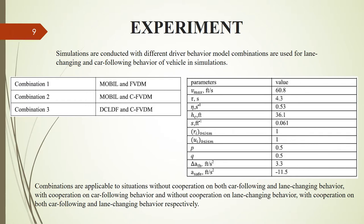Simulations are conducted with different driver behavior model combinations that are used for lane-changing and car-following behaviors of vehicles in simulation. As shown, the driving model combinations include MOBIL and FVDM, MOBIL and C-FVDM, and DCLD and C-FVDM, which are denoted combination 1, combination 2, and combination 3, respectively.